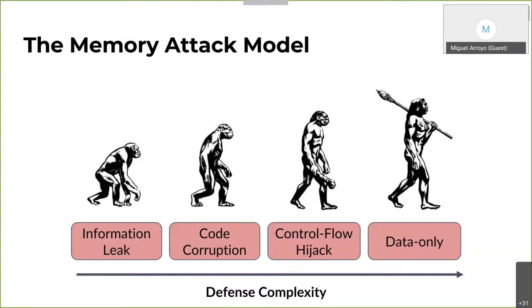From a fundamental aspect, some of you may be wondering why defending against one type of attack is more difficult than others if it's essentially the same underlying vulnerability. Consider the following: what is necessary to prevent an information leak? You need to know what data is sensitive. What is necessary to prevent code corruption? You need to know which code regions are supposed to be executable. What is necessary to prevent control flow hijacking? You need to know the valid execution paths the program may take. And what is necessary to prevent data-only attacks? You need to know the flows and values of data. In other words, the levels of knowledge required for protection increase, making these defenses more complex.